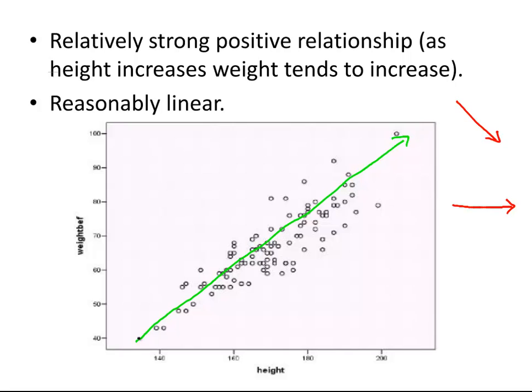A relatively strong positive linear relationship. Why is it relatively strong? Because the points on the scatter plot are, for the most part, quite closely packed around our imaginary trend line. It could be a bit stronger - like a couple of these points out here, if they were a bit closer to the trend line we would say it's stronger. And it's a reasonably linear relationship.